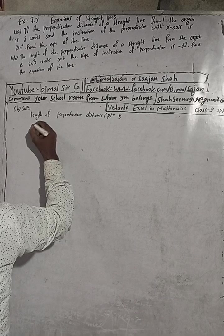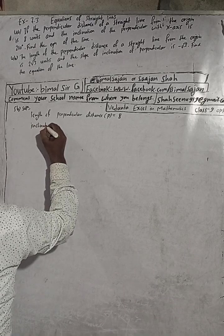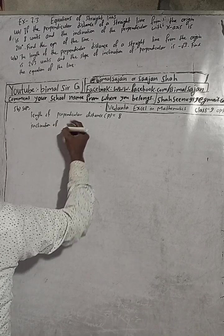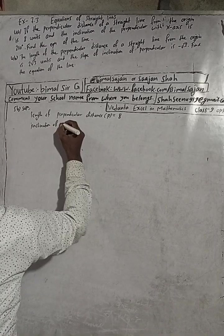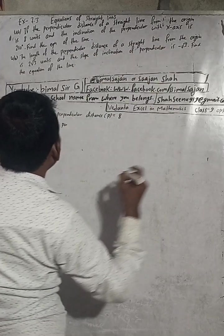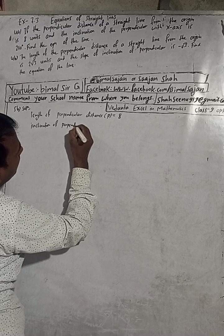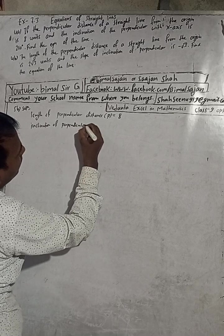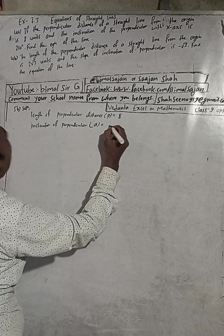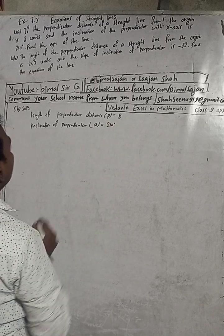And the inclination of the perpendicular, indicated by alpha, is equal to 210 degrees. Now we need to find the equation of the line.